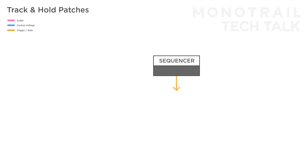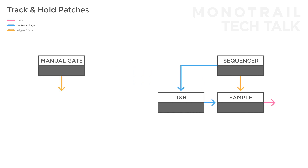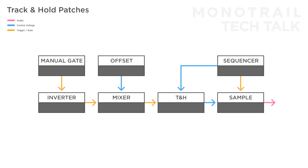Using a track and hold to influence a sequencer can lead to great results as well. For example, use a sequencer's clock to trigger a sample player and send its CV output through a track and hold module to select samples. The sequence is passed on to the sample player when you send the track and hold a gate, but the sequence will freeze when the gate drops out. If you want to invert this behavior — for example, use a manual gate to freeze the sequence — send your manual gate to an inverter and mix it with an offset. Now you have a gate that's always high until you send a manual gate into the setup.